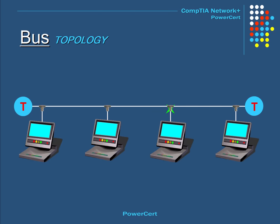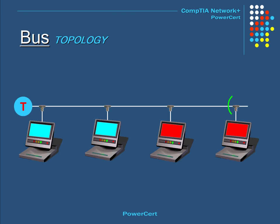One of the advantages of the bus topology is that it is fairly cheap and easy to implement. However, a disadvantage is that it requires the cable to be terminated at both ends using terminators. In order for this setup to remain operational, there must not be any open connections, including the ends that attach to the computers. If a computer is removed or added, or if terminators are loose or missing, the cable would be open and data would bounce back.